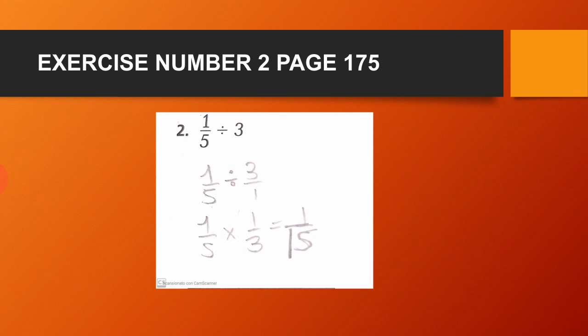So 1 over 5 times 1 over 3. We keep the first fraction as it is, change the division to multiplication, and flip 3 over 1 to 1 over 3. The number on top goes down and the number on the bottom goes up. 1 times 1 equals 1, and 5 times 3 equals 15. So the result is 1 over 15.